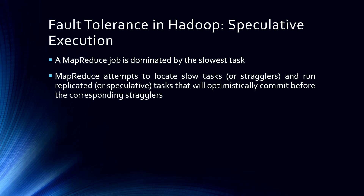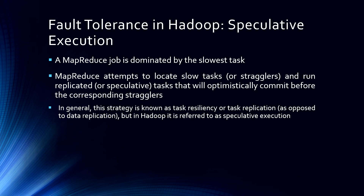This is why we have speculative execution in Hadoop — it does not try to diagnose why a task is running slower, as that would itself take processing time and computation. Instead, when a task is running slower, it automatically detects that task and launches another equivalent task as a backup. That is known as speculative execution. In general, this strategy is known as task resiliency or task replication, as opposed to data replication, but in Hadoop it is referred to as speculative execution.